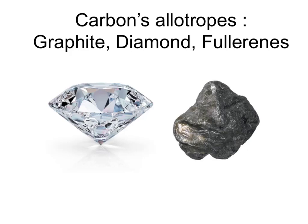This tutorial is all about three allotropes or forms of carbon: graphite, diamond, and fullerenes, and how the uses can be related to their properties and how these properties can be explained by their structures and bonding.